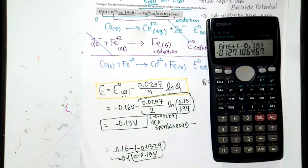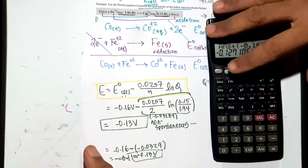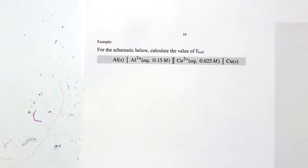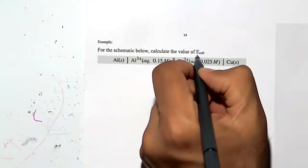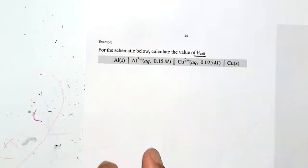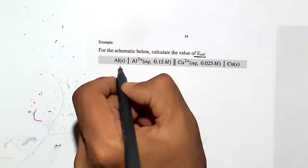This calculation can be tricky — putting it all into the calculator correctly can lead to wrong answers. There's more than one correct way to do this computation. Let's do our last problem, which also involves the Nernst equation. Now we're asked to find the value of E-cell.